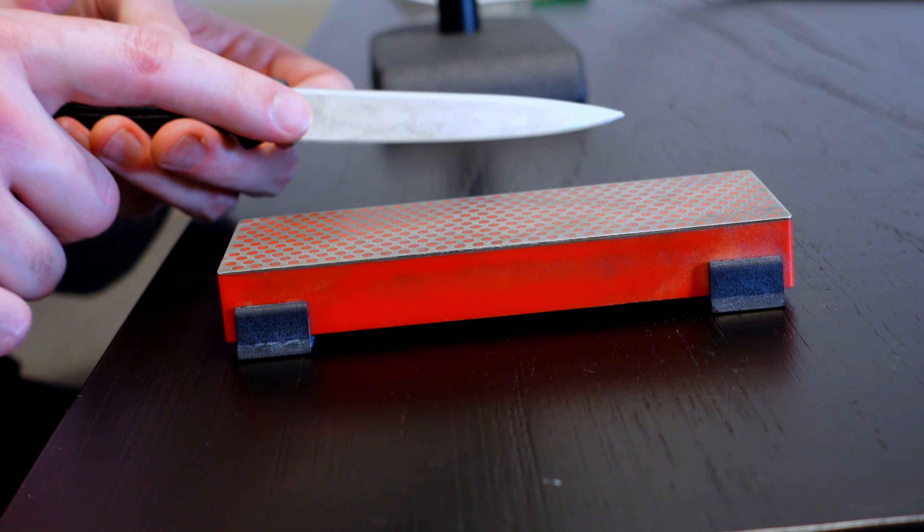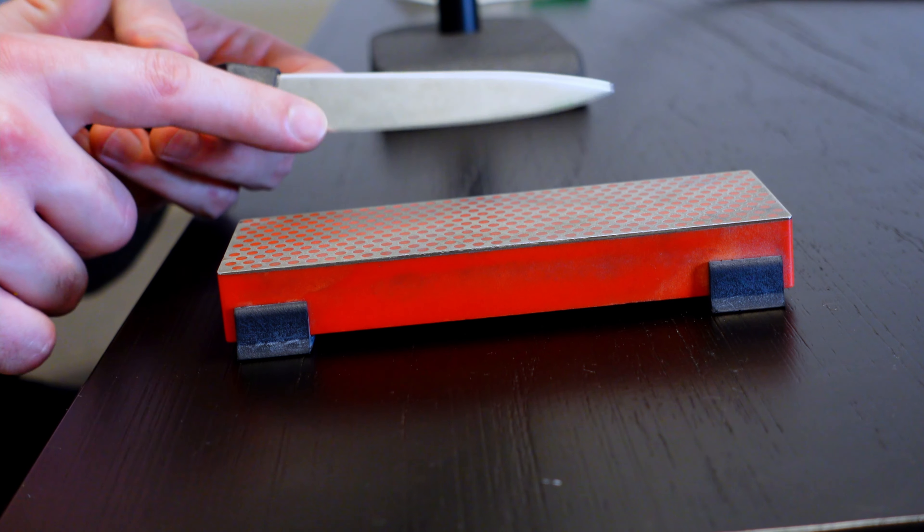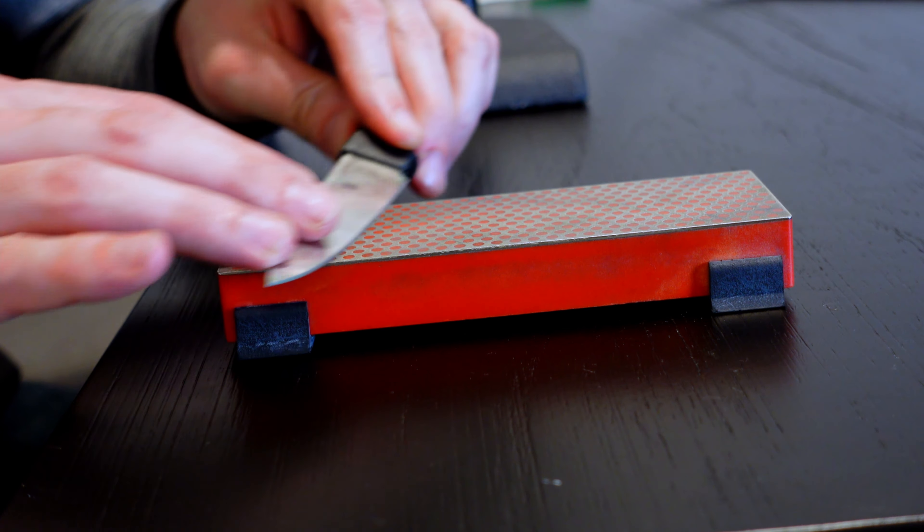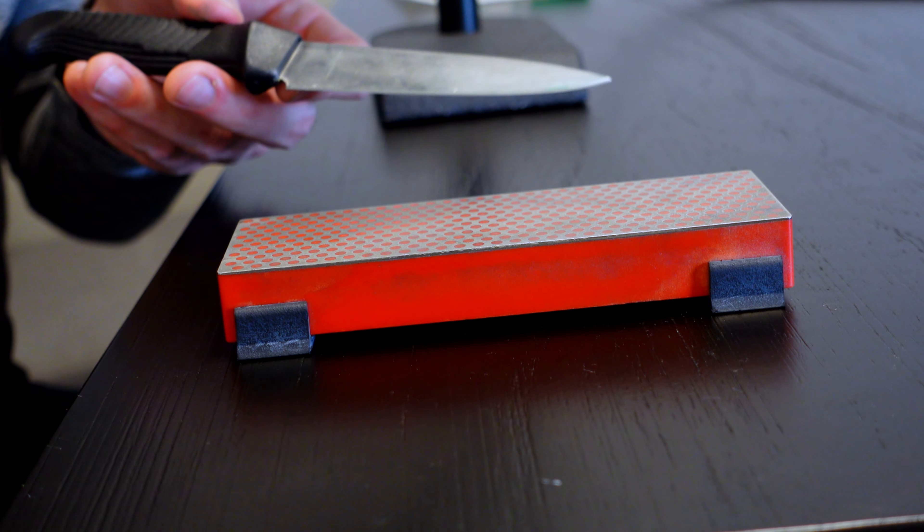But let's say you're just trying to hit the exact factory edge that was put on this knife. Well, if you put the Sharpie on there and you grind across that stone and the Sharpie is completely off the whole cutting edge that's on there, then you've done it right.